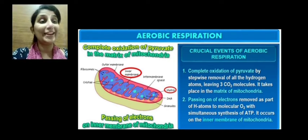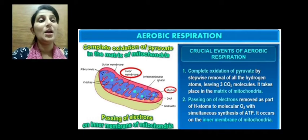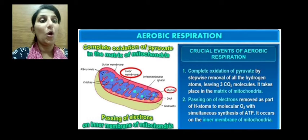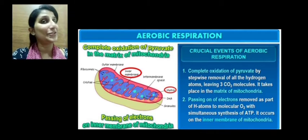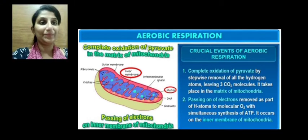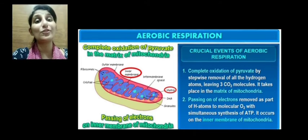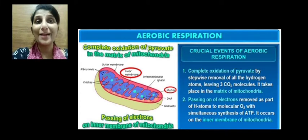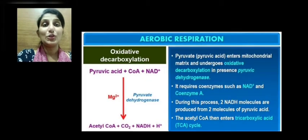The second event is the passing on of electrons removed as part of hydrogen atoms to molecular oxygen, with simultaneous synthesis of ATP. When electrons are transferred stepwise and finally accepted by molecular oxygen, ATP is synthesized. This electron transport system takes place in the inner membrane of the mitochondria.